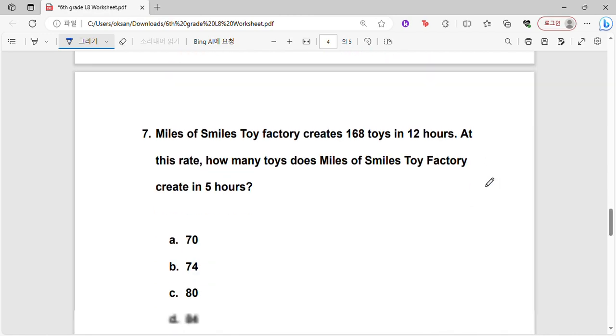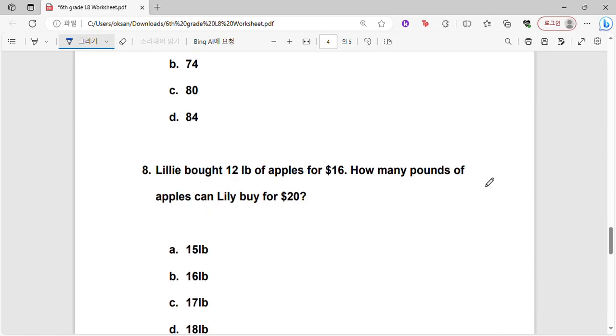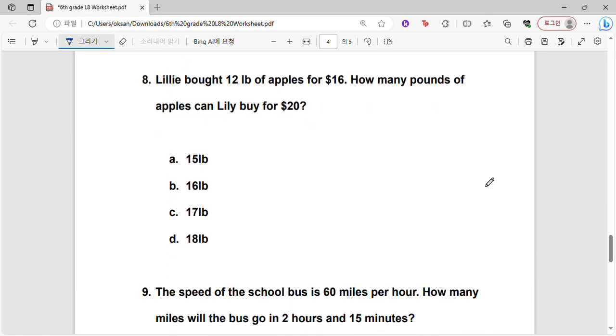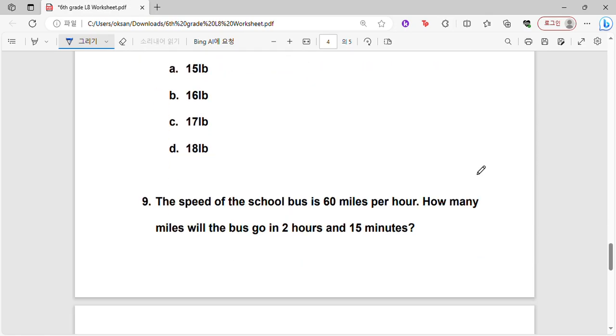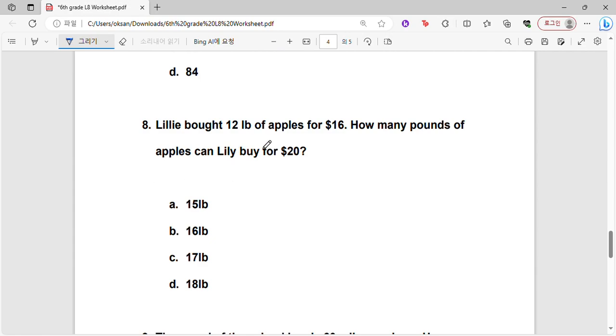Okay, let's do one more question. Let's do number 8. So Lily bought 12 pounds of apples for $16. How many pounds of apples can Lily buy for $20? So 12 pounds of apples for $16, right?